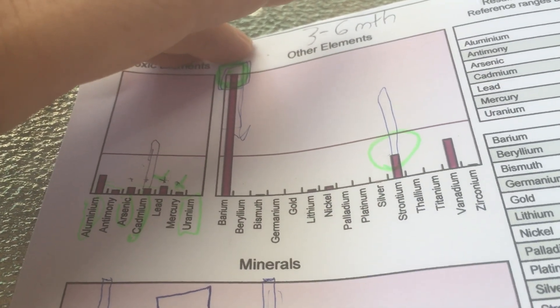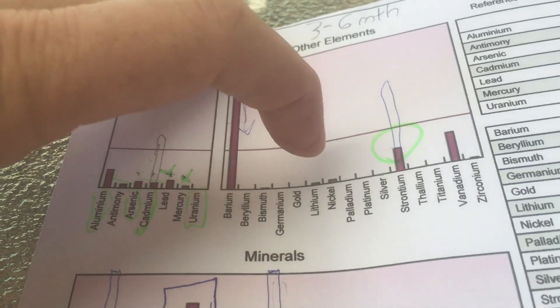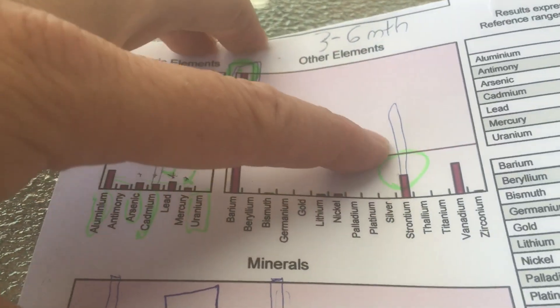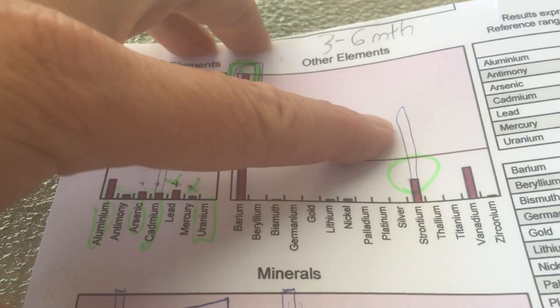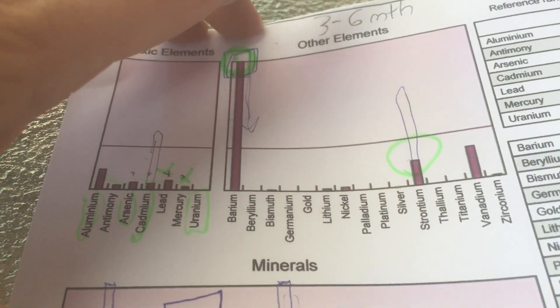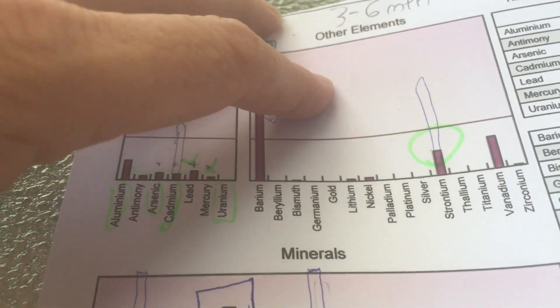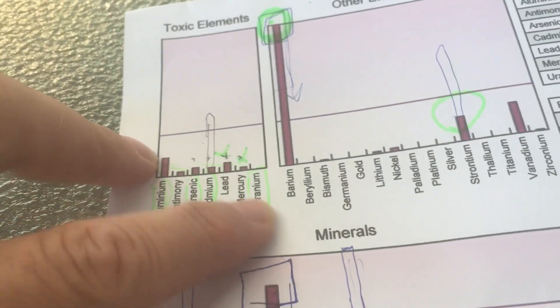So once I start the targeted detox process, which starts today, you'll see that all these levels - see he's drawn a line there - he'll say your strontium will probably go up to there once you start detoxing it. Because as I said, this just shows the level that's coming out of my body. So on this side everything's very low.